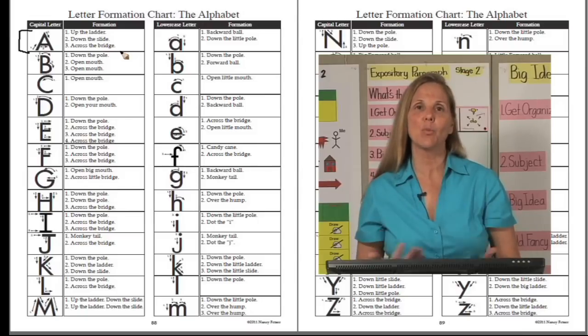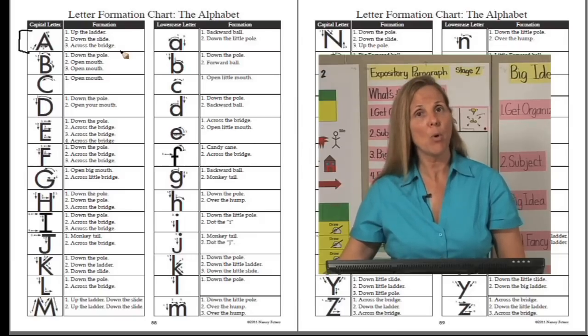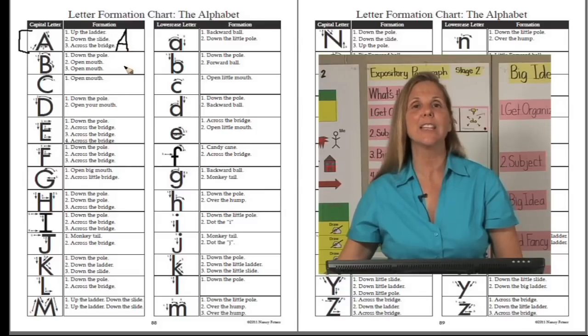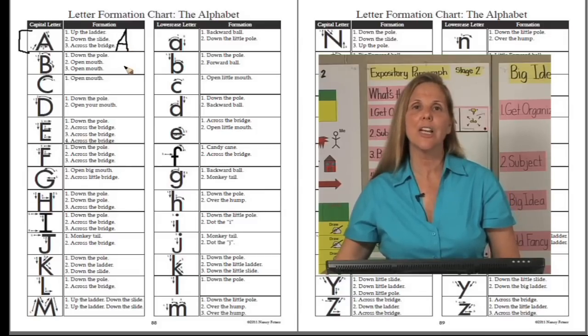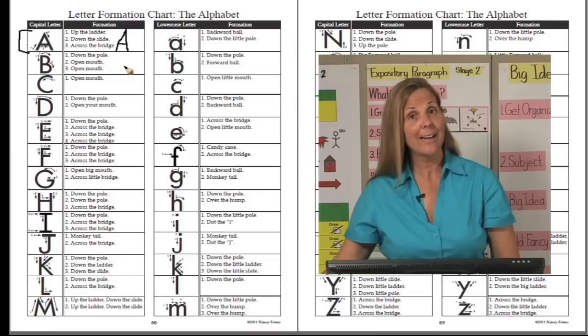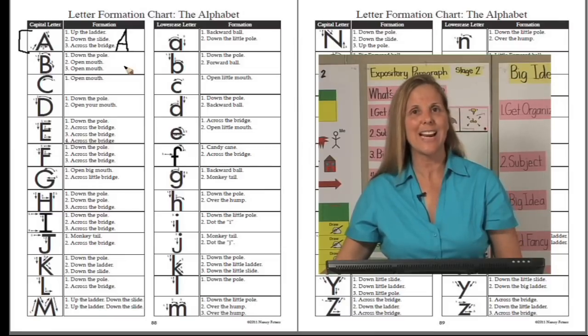Once students can write the letters using their large motor activities, then we switch to the more fine motor where we'll use the whiteboard and then finally paper and pencil. So now what will students do? They'll go up the ladder, down the slide, cross the bridge, and they've made the letter A. So every time they go to write, they will say those little chants in order to help them remember how to form the letters. These two pages are wonderful at-a-glance sheets to assist your students or your child as they write the different letters of the alphabet.